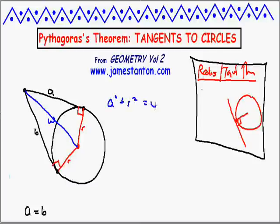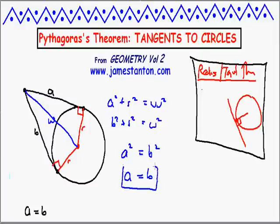What's going on? Well, by Pythagoras, a squared plus r squared is w squared. And b squared plus r squared is also w squared. So a squared is w squared minus r squared. B squared is also w squared minus r squared. So we conclude from this that a squared is b squared. And taking square root, since everything is positive, we know that that's going to force that a equals b.